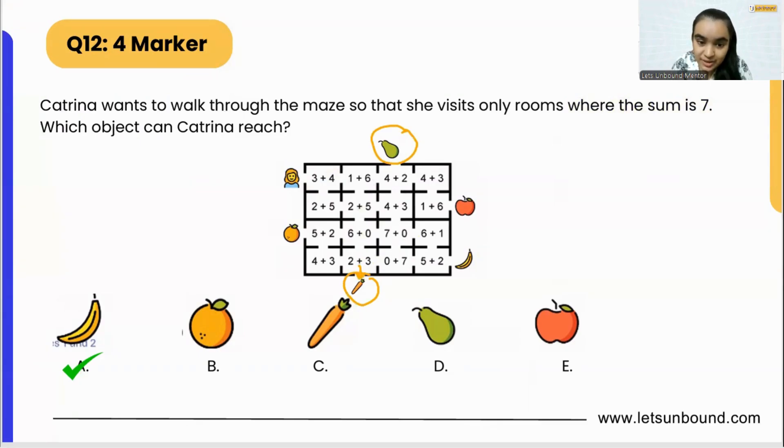And if you will see carefully, this pear and this carrot—if we want to reach carrot, we have to land on 2 plus 3, but it will not give 7 as the answer, right? So we can eliminate this option, pear. And also, 4 plus 2 is 6, so we cannot reach pear as well. So that means option D is also eliminated.